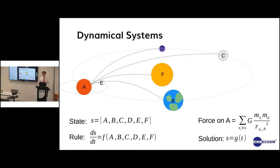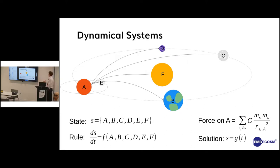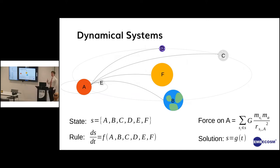Our rules for how this state would change would be the rules of physics — things like the instantaneous force on planet A at any point is proportional to A's relative mass to the other planets and its distance from them. That is a dynamical system. Solving a dynamical system in this context is trying to solve a differential equation. We have a rule for changing our state over time, but we don't have a way of just getting our state at any arbitrary time — we want an equation dependent on time so we can plug in 'I want to know where my planets are at year 200' and get an answer.